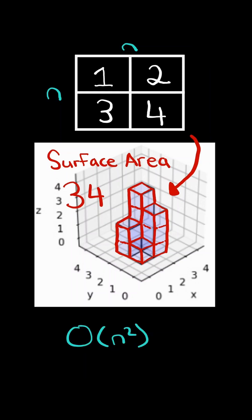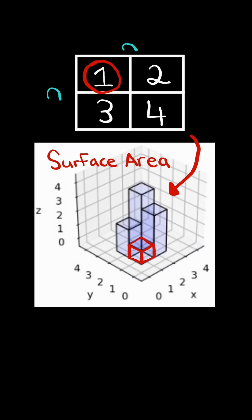We will solve this in O(n²) time. Let's consider the surface area resulting from the tower of one cube. As long as the height of the cubes is greater than 0, we are guaranteed two surface areas from the top plus bottom of the cube. Now we need to consider the surface area resulting from the sides of the cube.